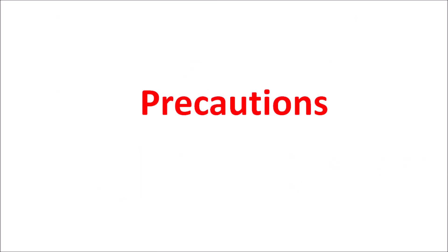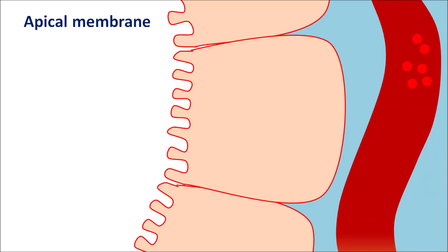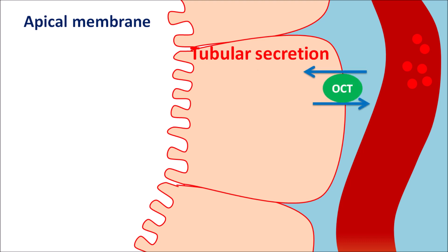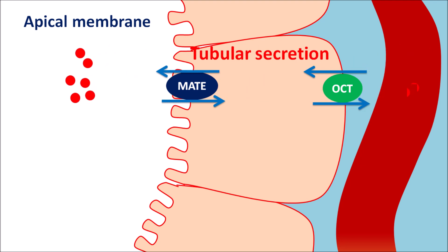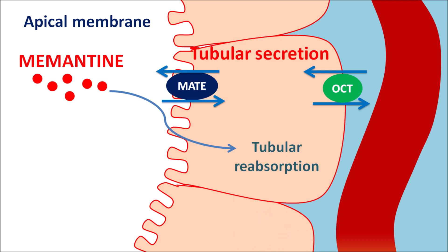An important precaution for Memantine concerns its renal clearance. Memantine is secreted into the renal tubules by tubular secretion. Organic cation transporters are present on the basolateral membrane, and multi-drug transporters are present on the apical membrane. Through these transporters, Memantine is secreted into the renal tubules and excreted in the urine. This drug can also be reabsorbed back into the tubules by tubular reabsorption.